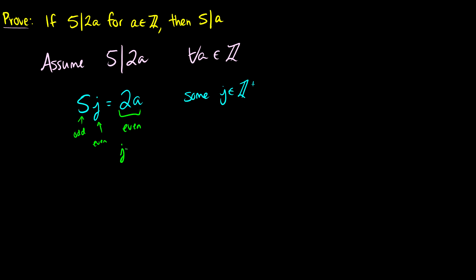So we can rewrite j as 2 times k for some k in our integers as well. This is now going to be 5 times 2k equals 2a, so we can divide both sides by 2 and we're left with 5k equals a. And now by definition this means that 5 divides a. So we assume that 5 divides 2a and we've proven that 5 divides a. That is an example of a direct proof.